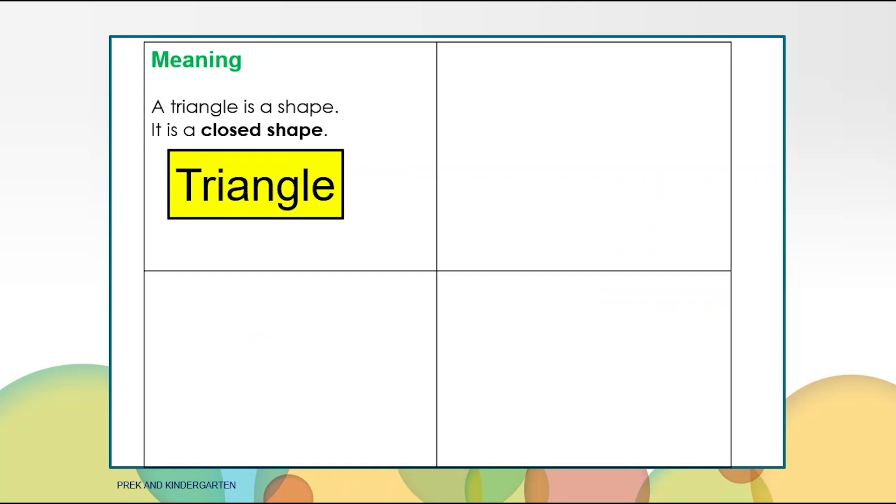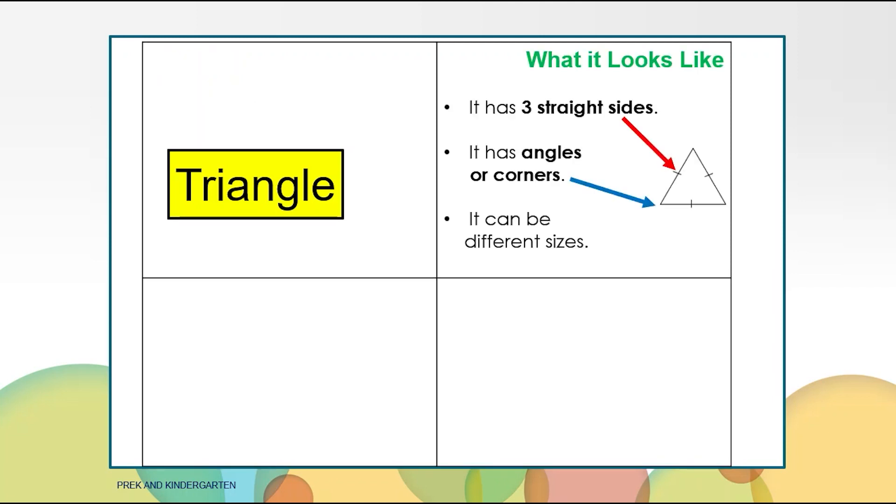The next shape we are going to learn about is a triangle. It is a closed shape. It has three straight sides. See where the red arrow is pointing? This is a side, the straight line. A triangle also has three angles or corners. The blue arrow is pointing to one of the angles.